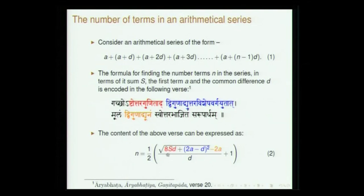Gachoshtottara gunitaat: Ashta is 8, Uttara is the common difference. Then Dvigunad yuttara visesha varga yuttat: Adhi is the first term, Dvigunadhi is 2 times a, Uttara visesha — visesha means difference — so Dvigunadhi is 2a minus d, and Varga is square, Yutta is addition. So the term 8sd is added to (2a minus d) squared. Then Moolam — you take the square root — minus 2a.